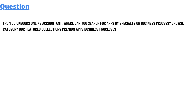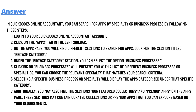The correct answer is: in QuickBooks Online Accountant you can search for apps by specialty of business process by following these steps. Option one: login to your QuickBooks Online Accountant account. Option two: click on the Apps tab in the left sidebar. Option three: on the app page you will find different sections to search for apps.